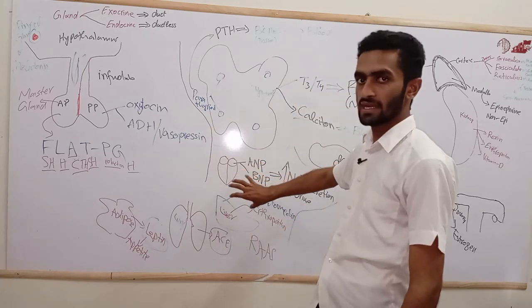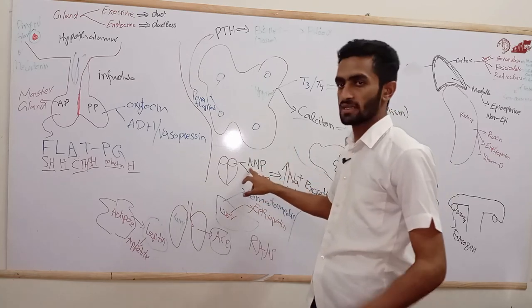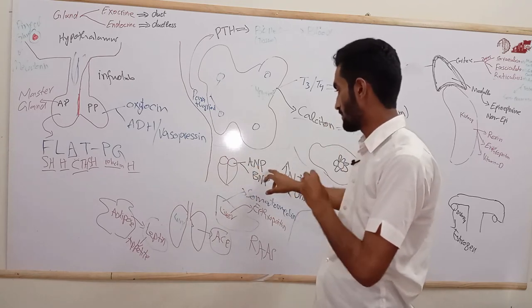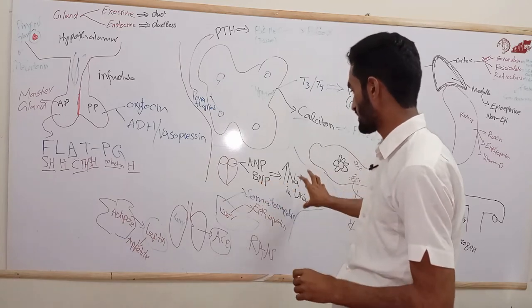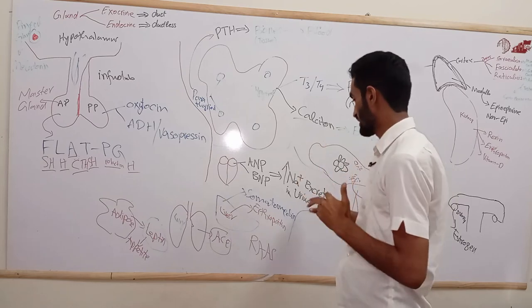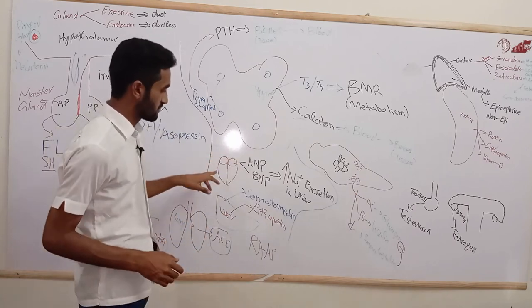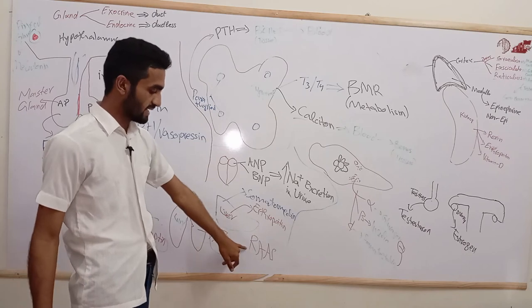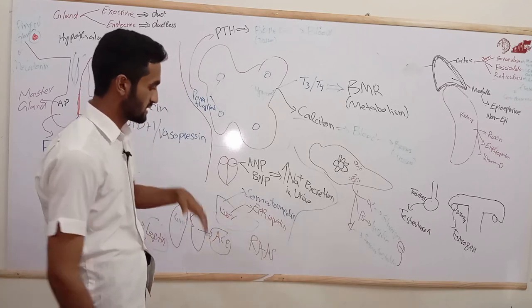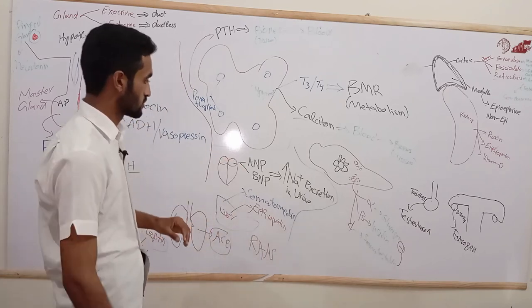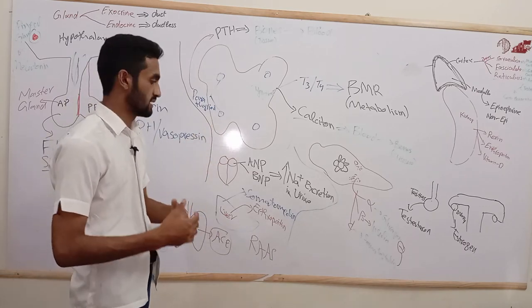The heart is also a gland — it secretes ANP (atrial natriuretic peptide) and BNP (brain natriuretic peptide). Their main function is to increase sodium excretion in the urine, which influences the renin-angiotensin-aldosterone system and helps maintain blood volume.